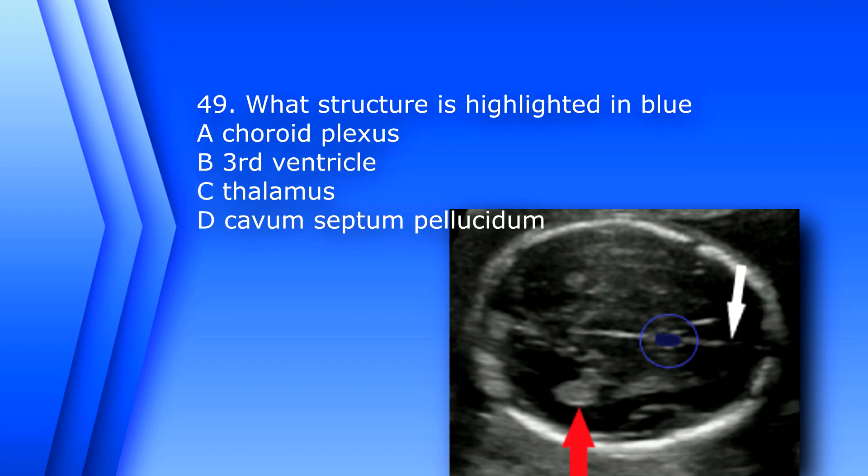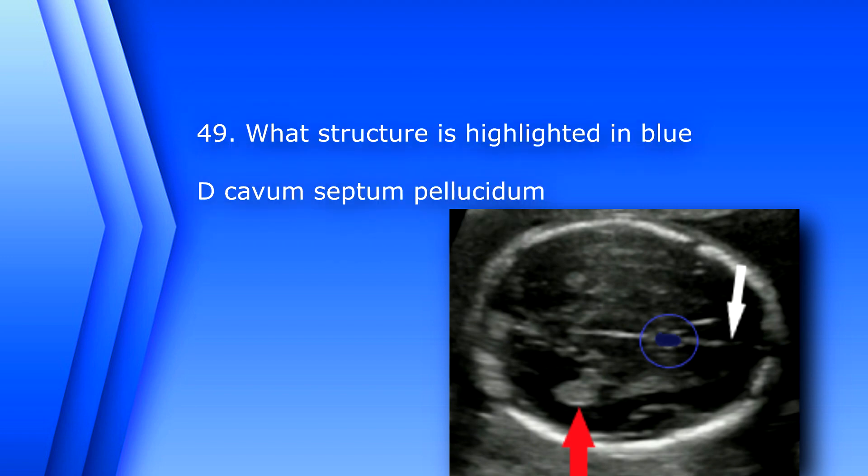Question 49: What structure is highlighted in blue? A) choroid plexus, B) third ventricle, C) thalamus, or D) cavum septum pellucidum. The answer is D, cavum septum pellucidum.